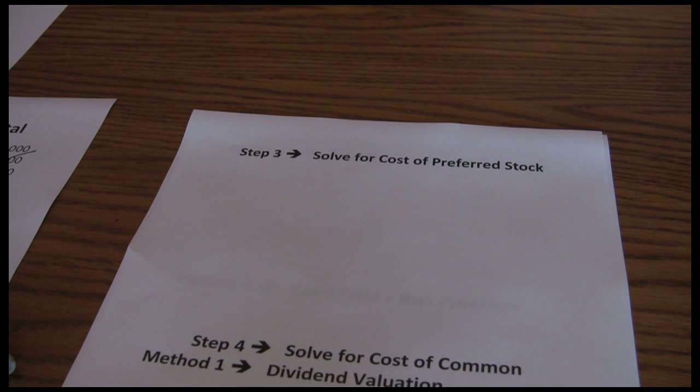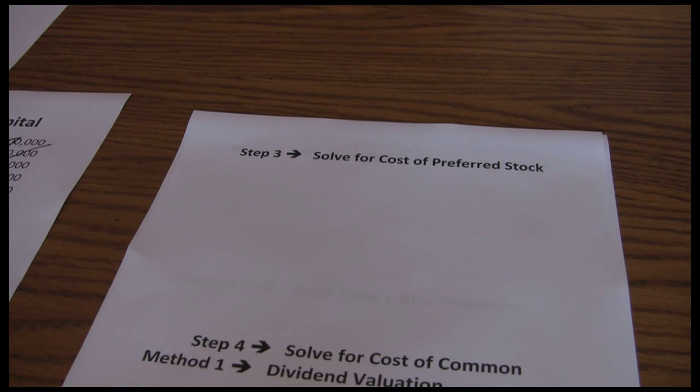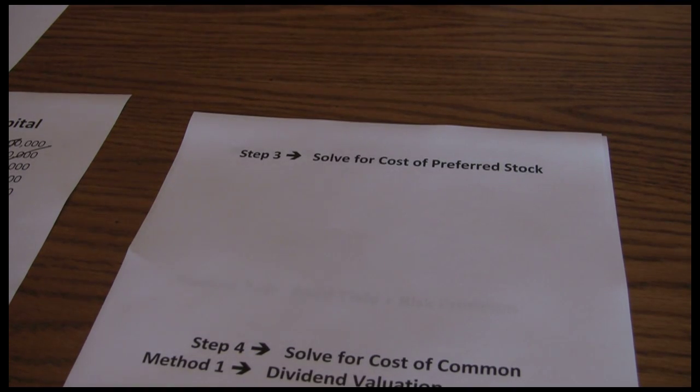This video is a continuation of our marginal cost of capital example. In the last video we went through the example itself and solved step one, the market value weights, and step two, the after tax cost of debt. What I want to do in this stage is continue on with step three, the cost of preferred stock.